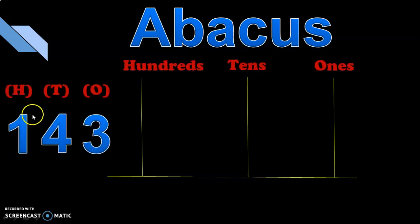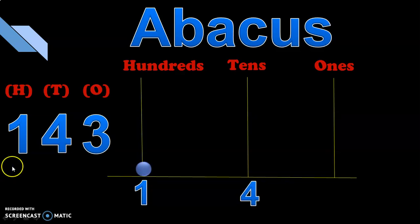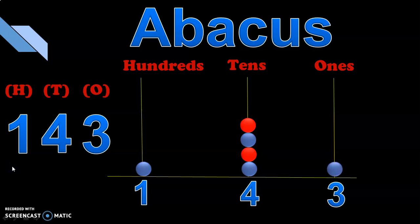Now let us represent the three-digit number 143 on the abacus. One is in the hundreds place, four is in the tens place, and three is in the ones place. Put one bead in the hundreds spike. Next, put four beads in the tens spike — one, two, three, four. Then put three beads in the ones spike — one, two, three. This is how a three-digit number is represented on an abacus.